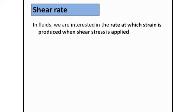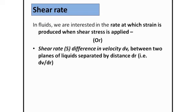The next concept is shear rate. In a fluid, we are always interested in the rate at which the strain is produced when shear stress is applied. By definition, shear rate is the difference in velocity dv between two planes of liquid separated by a distance dr — that is, dv/dr. The force acting per unit area is directly proportional to dv/dr, where dv/dr is the shear rate and force per unit area is the stress.